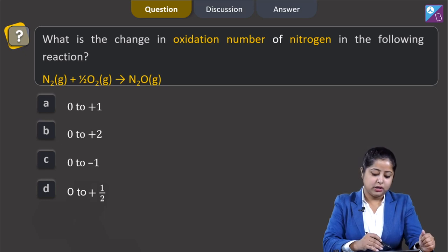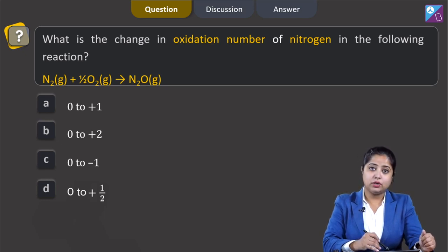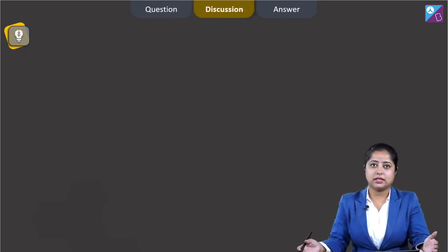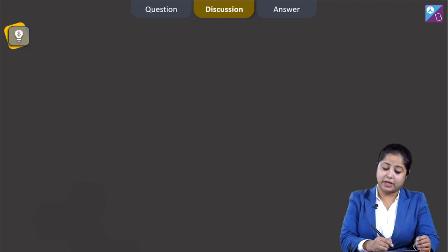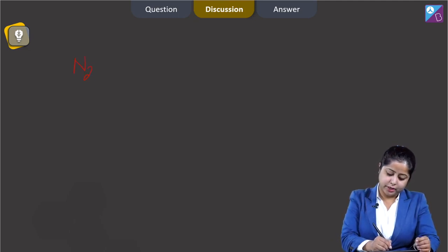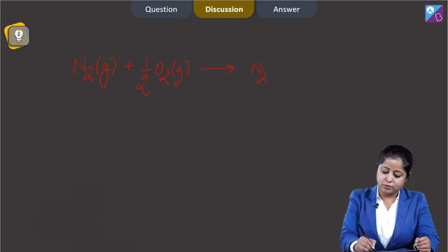The options are: 0 to +1, 0 to +2, 0 to −1, and 0 to +½. So, students, let us start this question. First of all, I am writing the reaction N₂ + ½O₂ → N₂O.